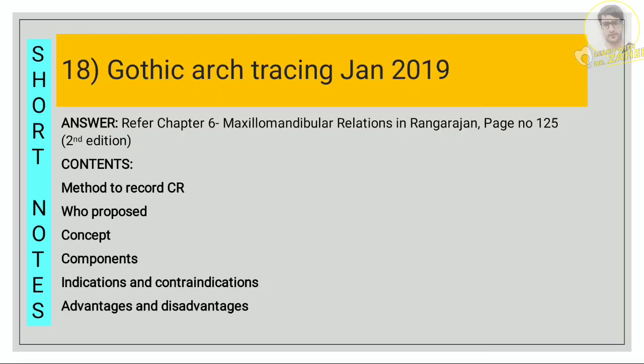For gothic arch tracing, refer chapter 6, page number 125. Write about the methods to record centric relation, who proposed it, the concept, the components, indications, contraindications, advantages, and disadvantages — all these should be mentioned.